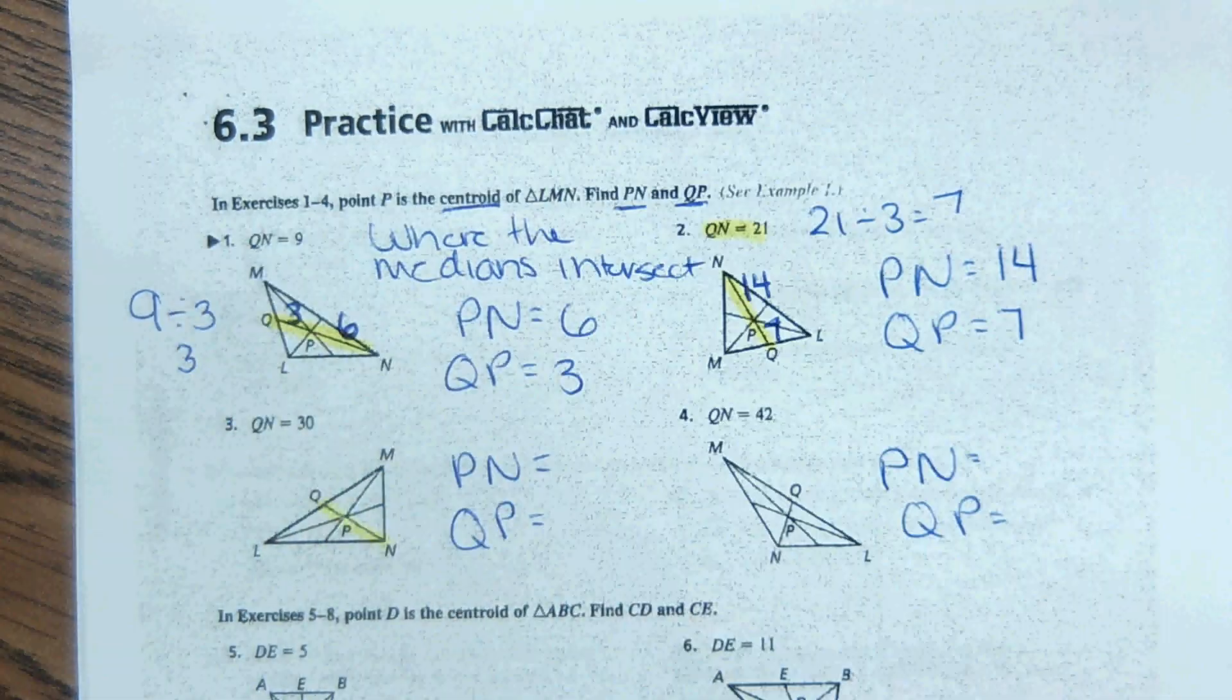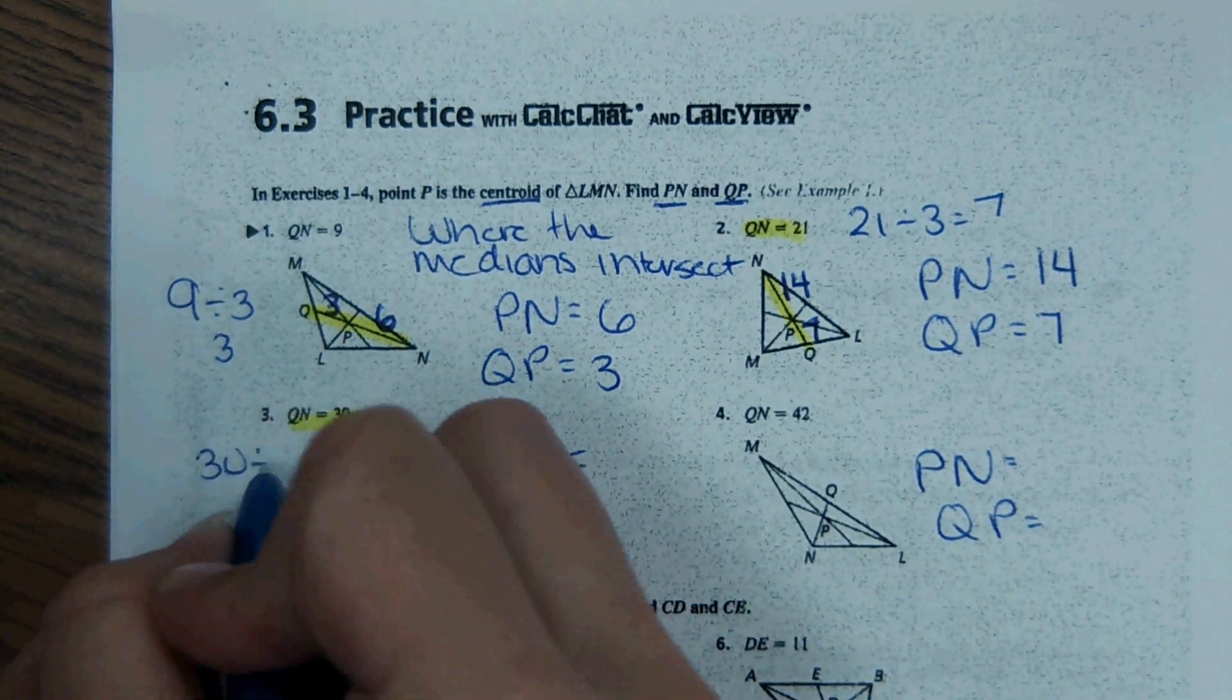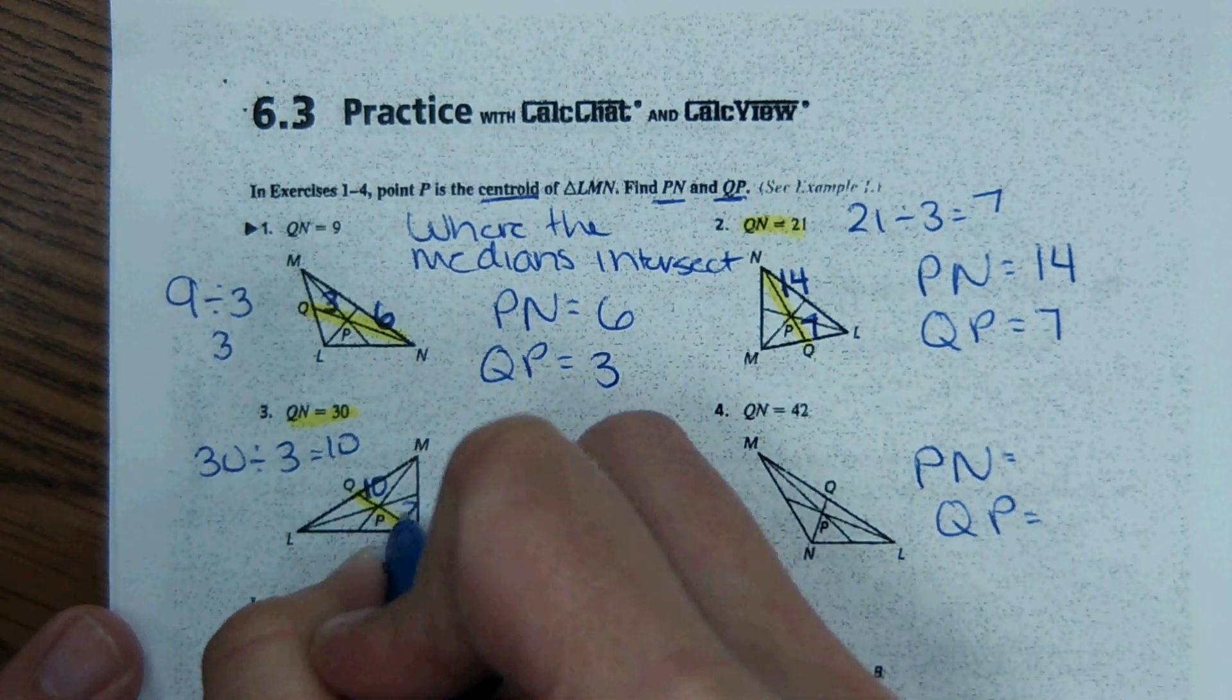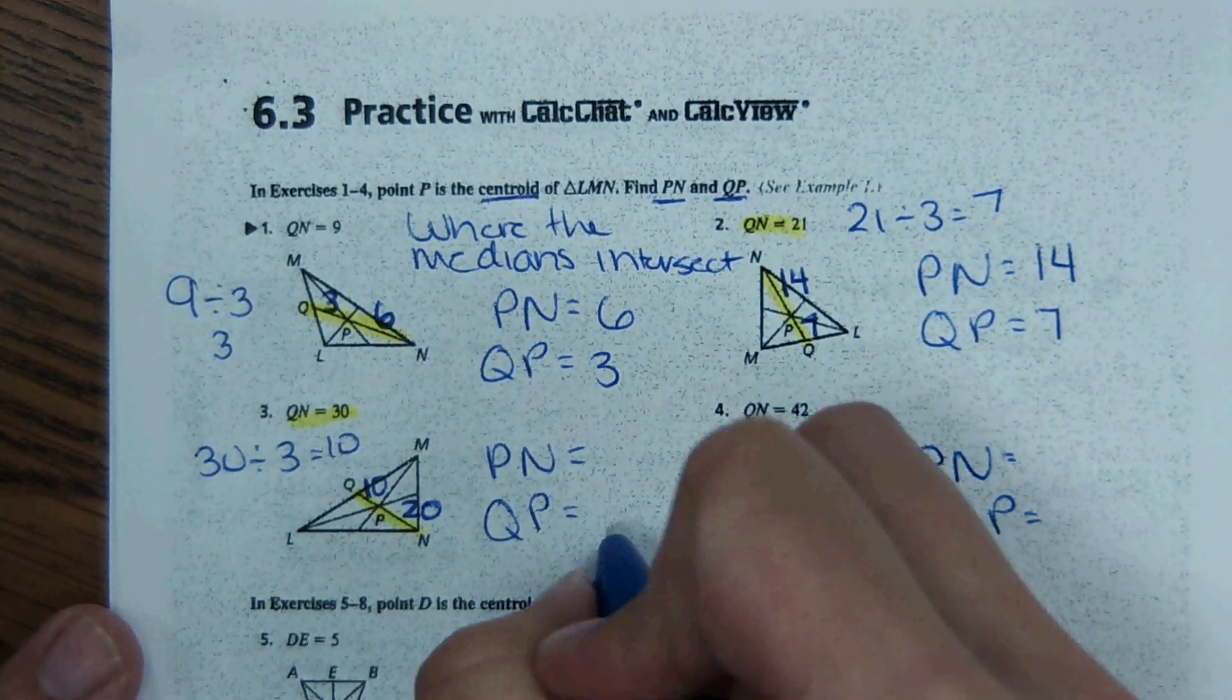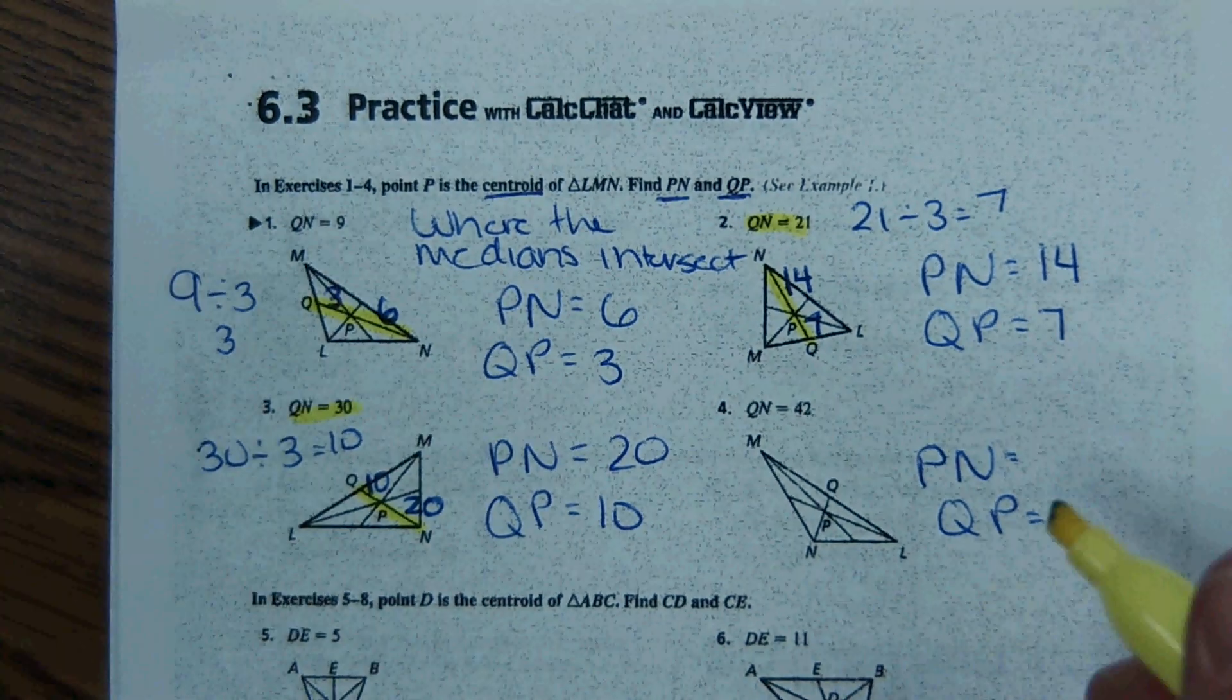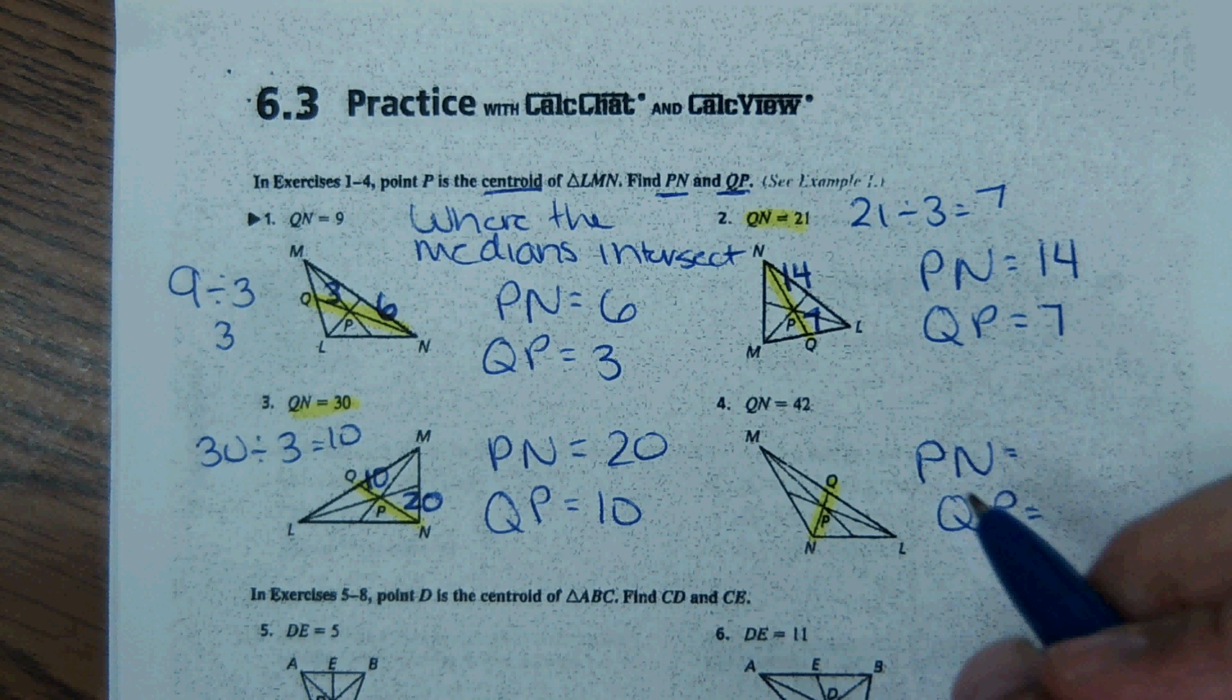Continuing the same process now. QN right here, it says QN is 30 units long. So we're going to take 30 divided by three to get 10. So our shorter segment is 10. And then the longer one is double that, which is 20. So QP is 10, and PN is 20.